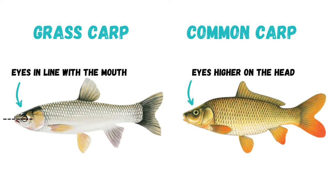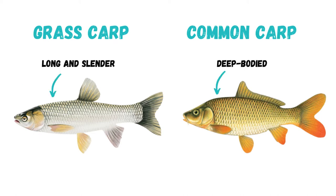The eyes of a grass carp are low on their head and in line with their mouth, whereas the eyes of a common carp are located higher on their head. Lastly, grass carp have a long slender body whereas common carp are more deep-bodied.